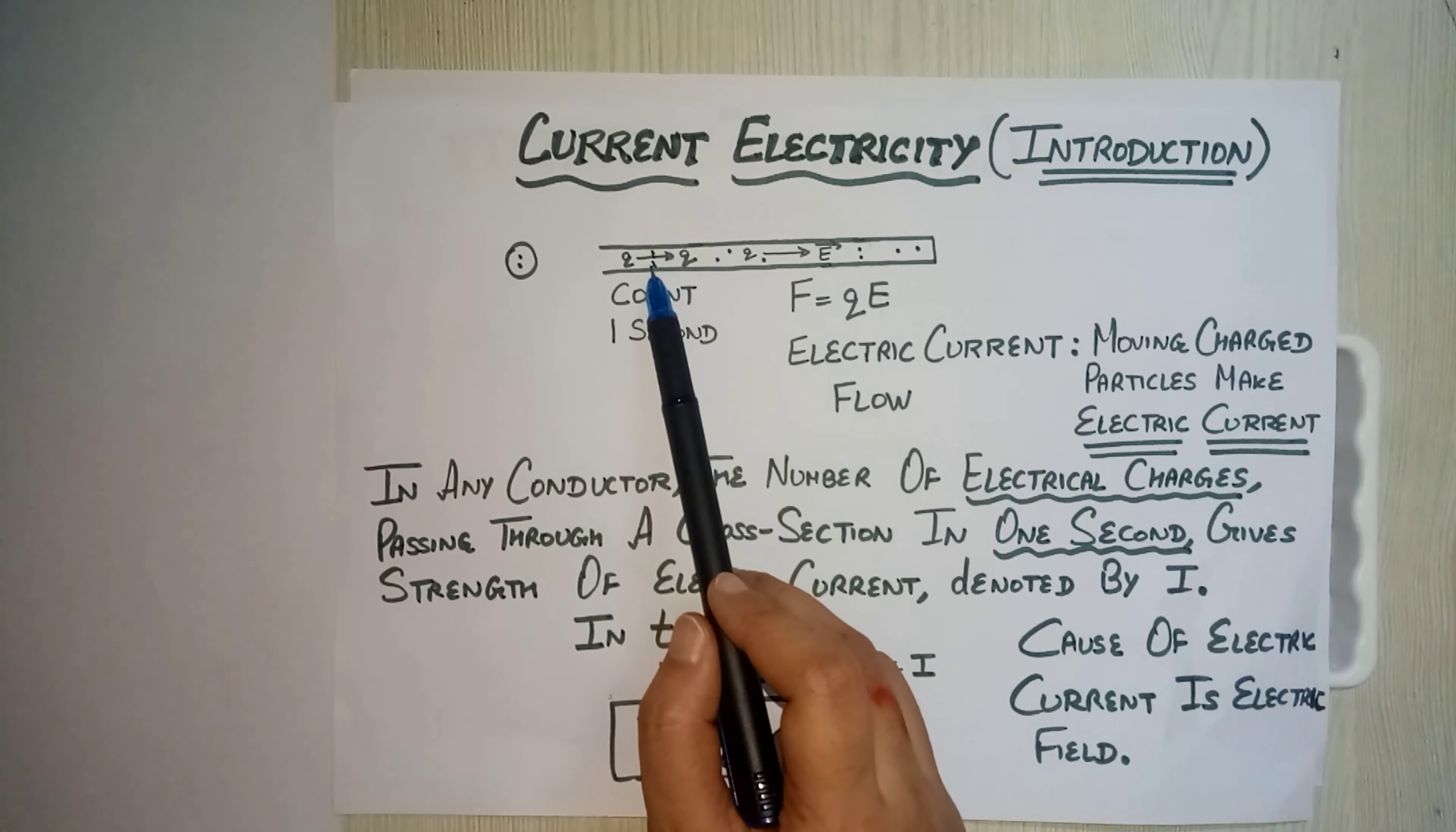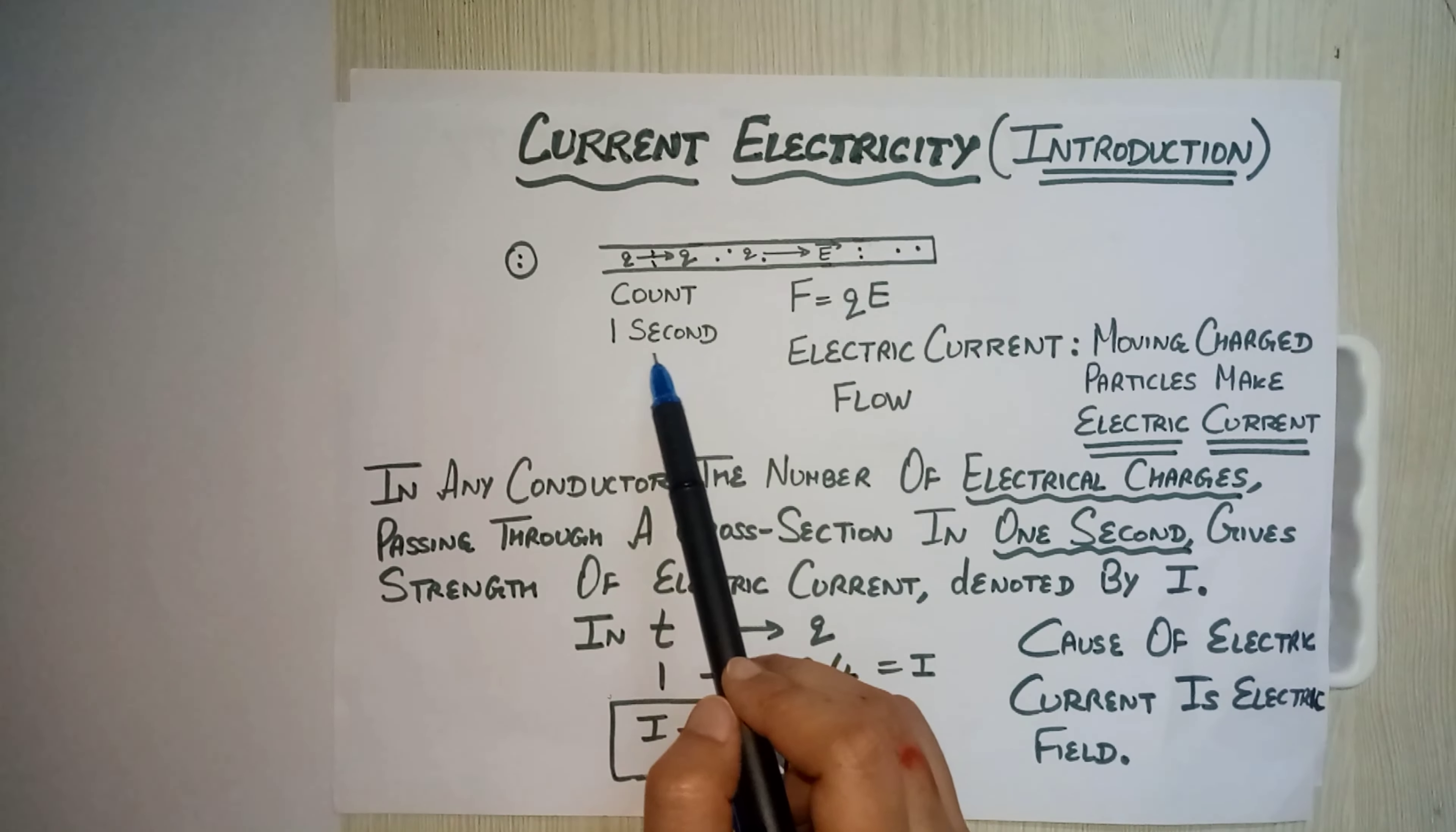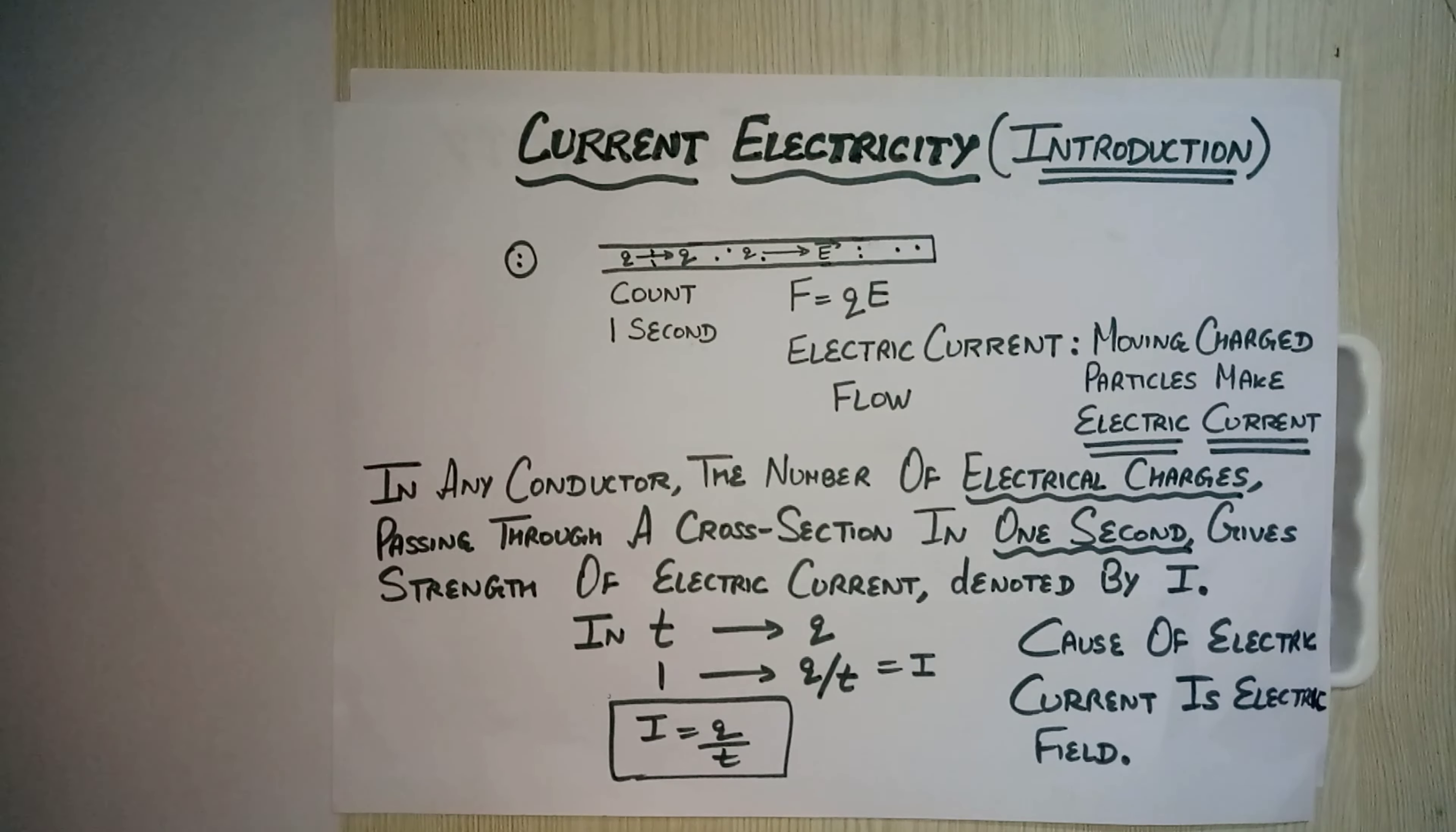So this is cross section - charges passing this in one second will be the strength of electric current. Like if in a river, the water current is less or the water current is more, how can we measure strength? If in one second maybe 100 liter of water is going in one case, and in other case maybe 500 liter water is going - maybe the speed of water is more, or maybe its volume is more, or maybe anything - but in one second if more water is going...